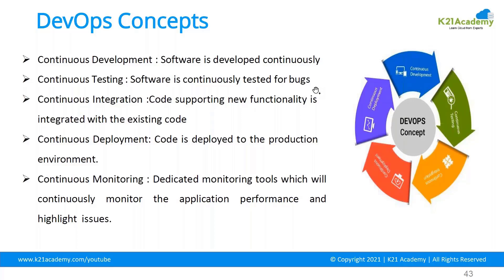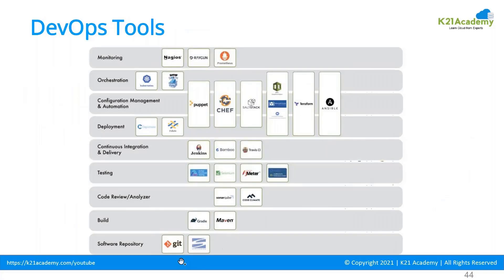Once testing is done, you integrate the code with all other changes using Jenkins. For deployment, you can use a CI/CD pipeline or separate deployment tools. In Amazon, you would use CodeDeploy. Monitoring is very important to maintain the SLA. For the Git stage, you can use Git or SVN as a central repository. For build tools, you can use Maven or Gradle.